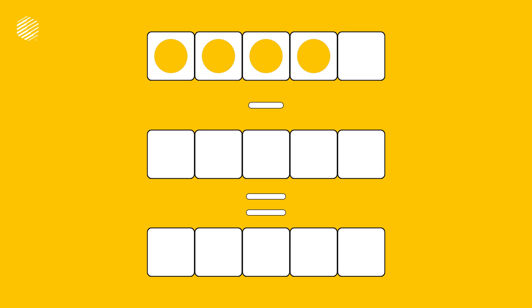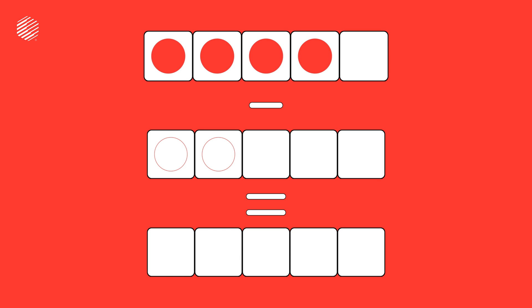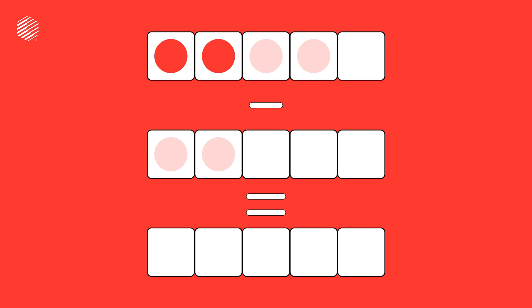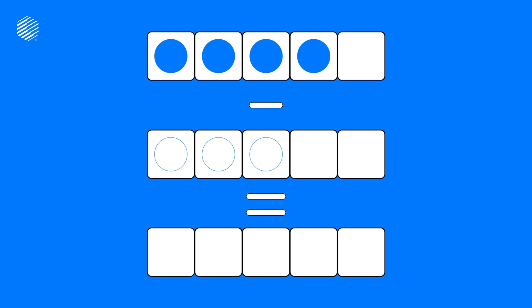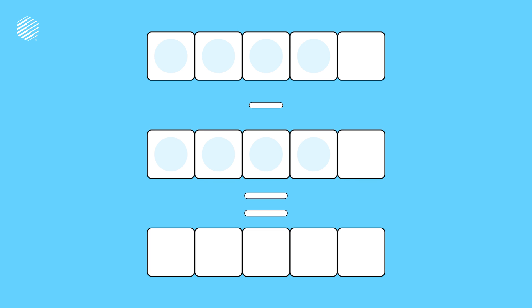4 minus 0 equals 4. 4 minus 1 equals 2. 4 minus 2 equals 2. 4 minus 3 equals 1. 4 minus 4 equals 0.